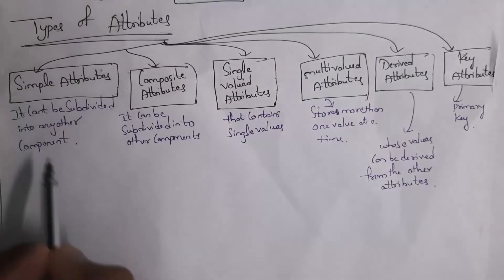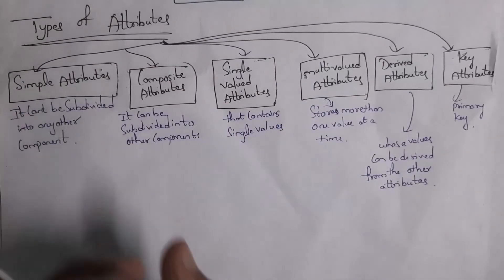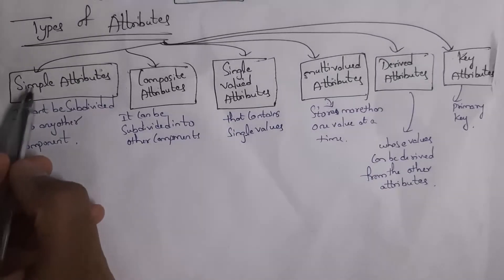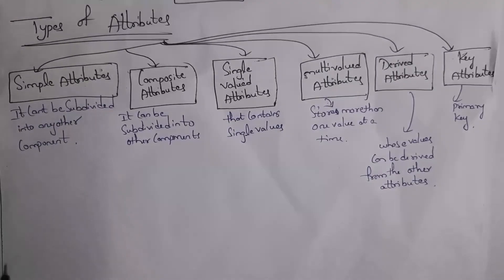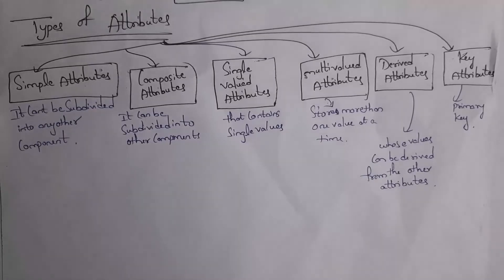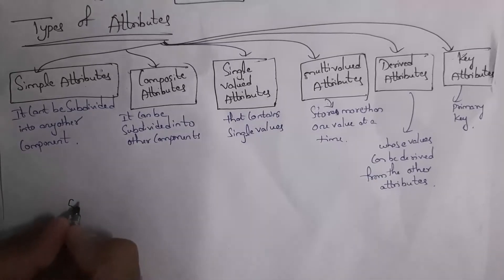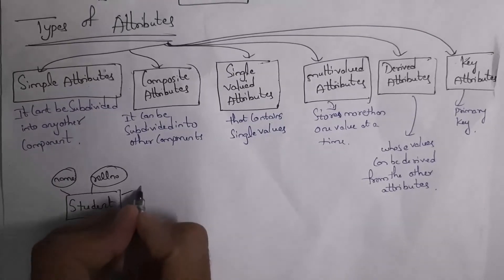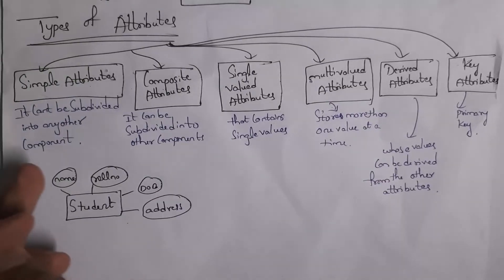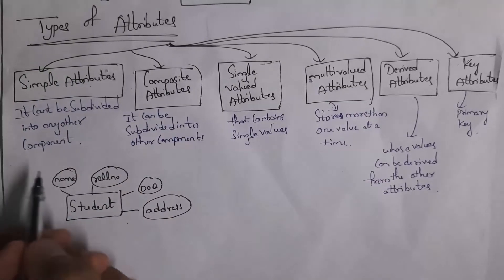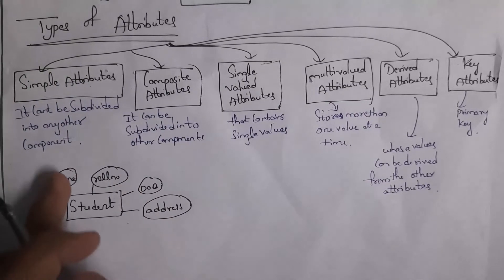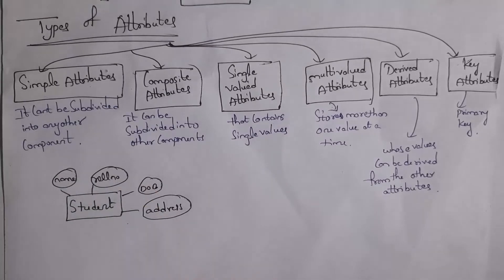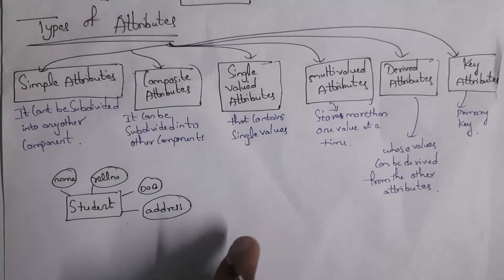These are various types of attributes. The first one is simple attribute. An attribute that cannot be subdivided into another component is known as a simple attribute. For example, in a student entity, attributes like name, roll number, date of birth and address — if we are not subdividing them, we call these as simple attributes.